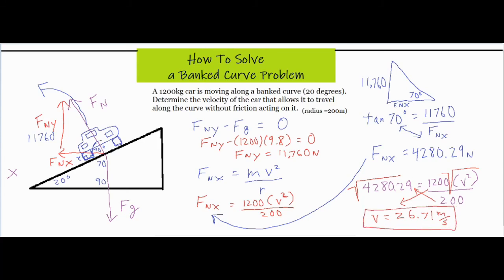We finish off with the final value of 26.71 meters per second. That's our final answer, we found the velocity of the car that allows it to travel on the curve without friction acting on it. Now if you were going slower than 26.71 then the car would have the tendency to slip down the hill and the force of friction would be pushing up the hill.